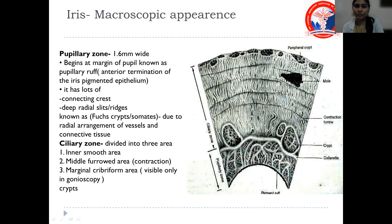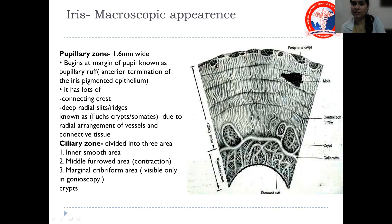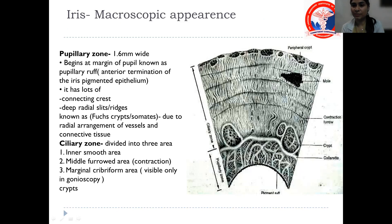The ciliary zone is divided into three areas: the inner smooth area, the middle furrowed area with contraction furrows responsible for contraction, and the marginal cribriform area visible on gonioscopy, where peripheral crypts are present. At these crypts, the iris is very thin, making them the sites where peripheral iridectomy is performed by laser, as iridectomy can be easily made there.